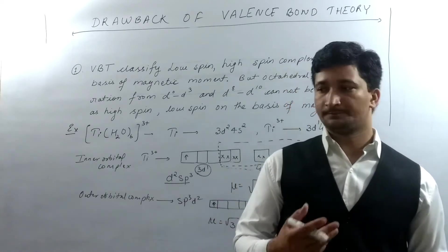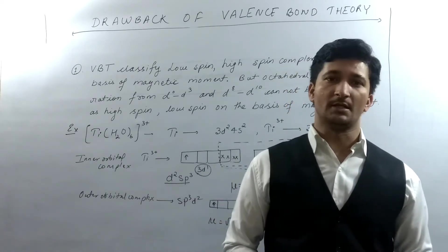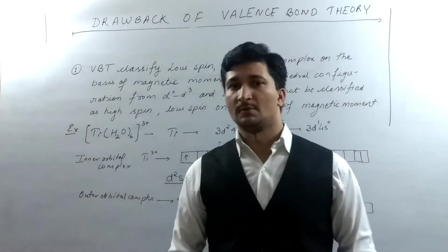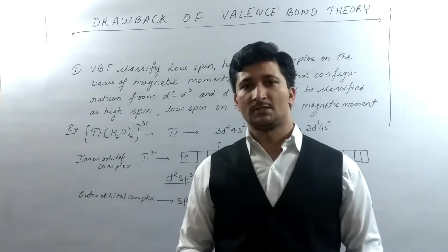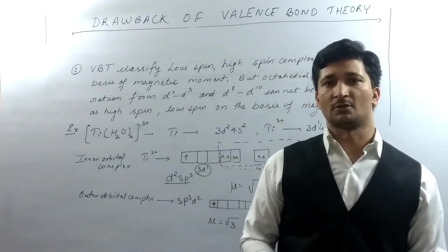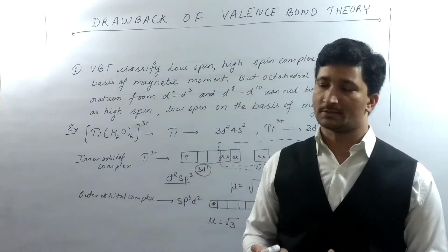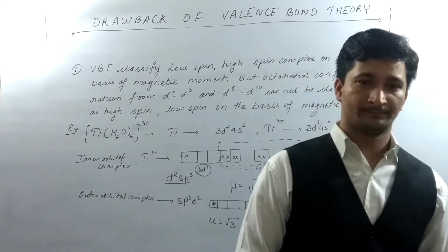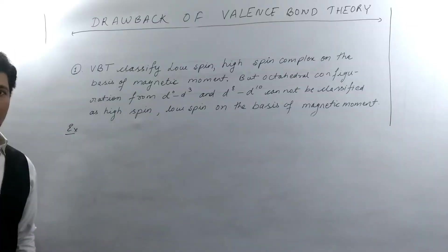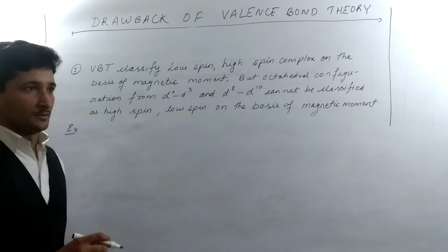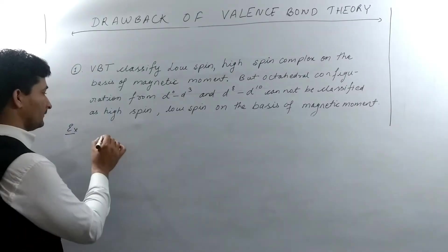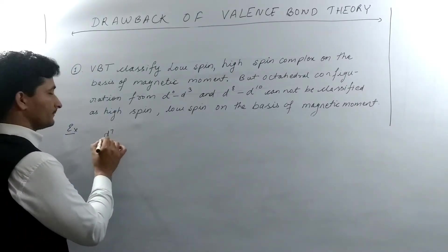Now I will show you that in a D7 type of system, there always exists an ambiguity between high spin complex and low spin complex. Let's take one more example where the configuration is of D7 type.